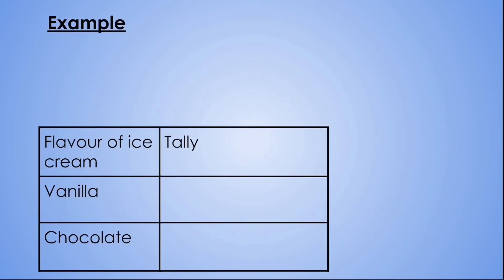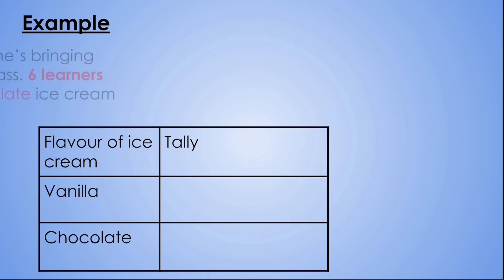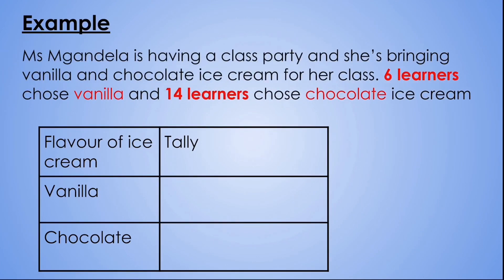Let's take a look at the following example. Our scenario reads: Miss Ngandela is having a class party and she's bringing vanilla and chocolate ice cream for her class. 6 learners chose vanilla and 14 learners chose chocolate ice cream. Can we put the following information into a tally table? Right here at the bottom, we have an example of a tally table. On the left hand side, we have the different flavors of ice cream, which is vanilla and chocolate. On the right hand side, we have the tally, which will show us the amount of learners who voted for each flavor of ice cream.